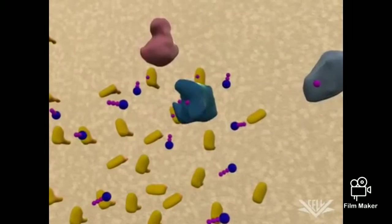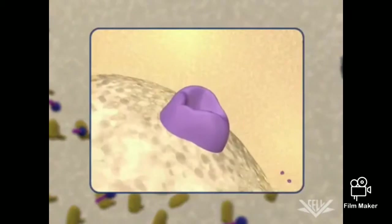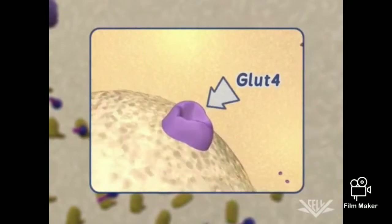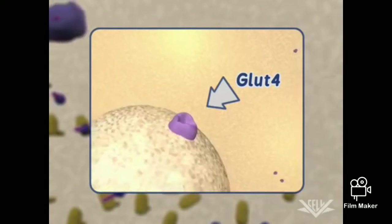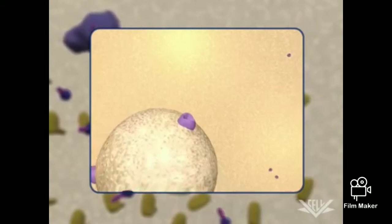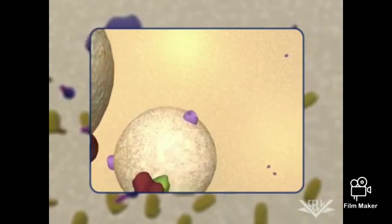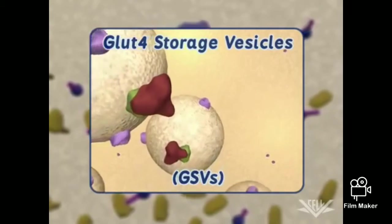So how does this affect the uptake of glucose? As we mentioned before, GLUT4 is a glucose transporter, and GLUT4 storage vesicles are held in a recycling state under the cell membrane.